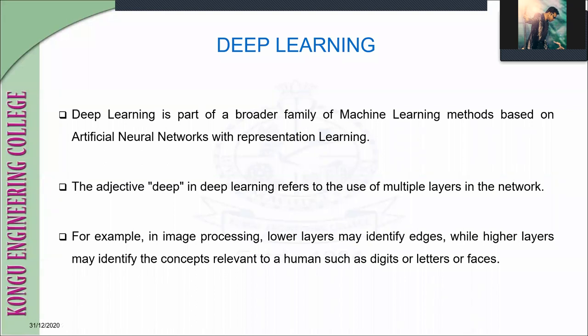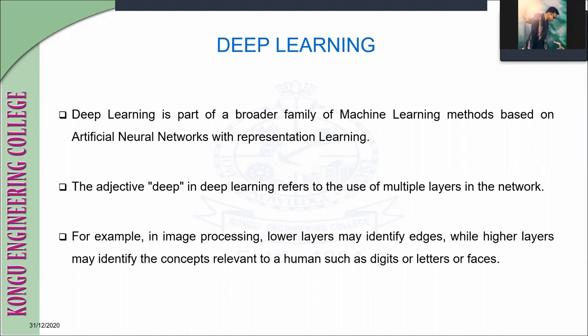Let us see about what is deep learning. Deep learning is a part of machine learning methods based on artificial neural networks with representation learning. The adjective 'deep' in deep learning refers to the use of multiple layers in the network. For example, in image processing, lower layers may identify edges while higher layers may identify concepts relevant to a human, such as digits or letter surfaces.